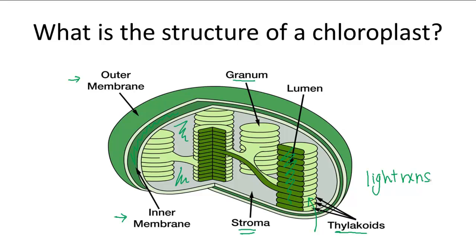The stroma is the site for the dark reactions. In summary, chloroplasts have a double membrane but also have a third membrane called the thylakoid membranes, which form grana. The light reactions occur in the thylakoids, whereas the dark reactions occur in the stroma.